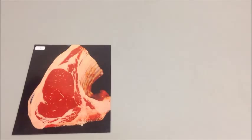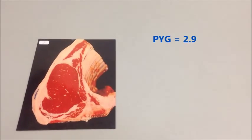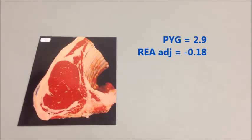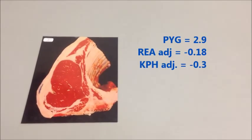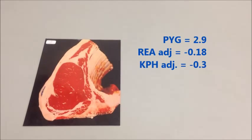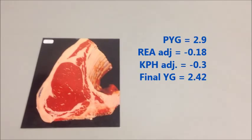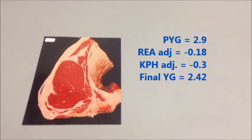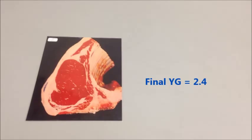Putting it all together: we had a preliminary yield grade of 2.9, we subtract 0.18 for the ribeye area adjustment, and we subtract 0.3 for the KPH adjustment. Adding all those together gives us 2.42, or a final yield grade of 2.4.